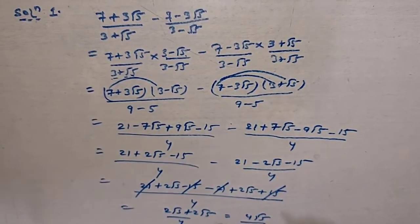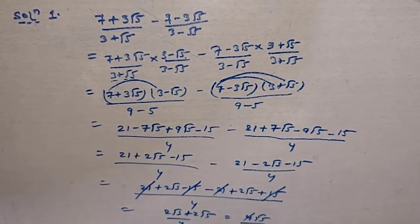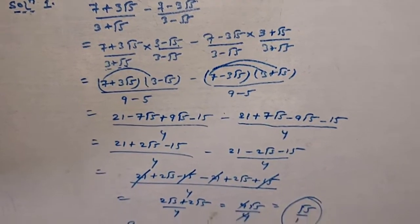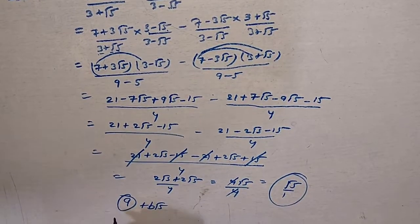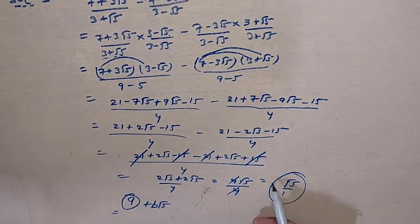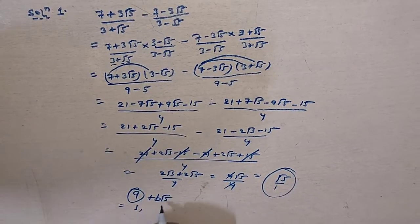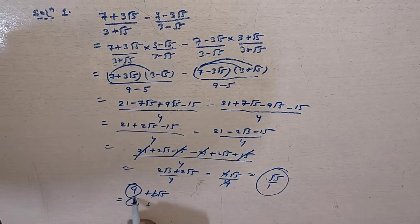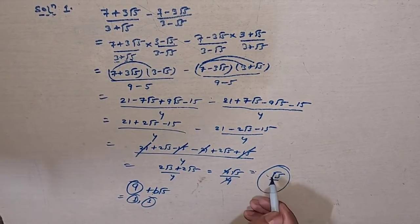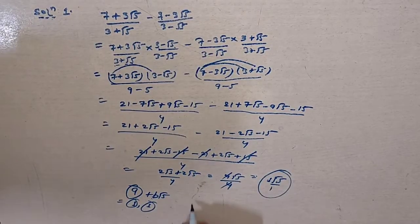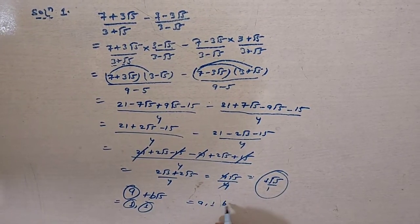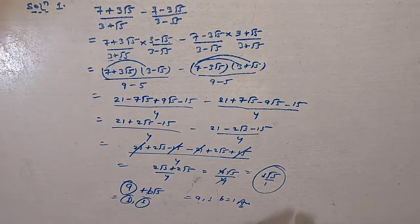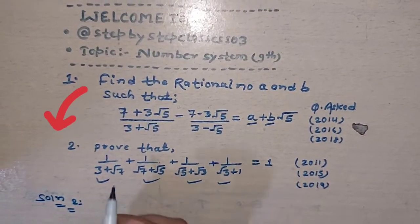After cancellation, 4 and 4 cancel, leaving just √5, which equals 0 + 1·√5. Since the result is in the form a + b√5, we identify a = 0 and b = 1. Wait — actually the result simplifies to show A is equal to 0 and B is equal to 1, so these are the two rational numbers. Thank you. Now we move to our second question.